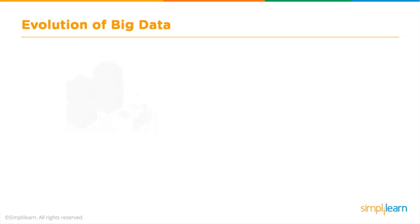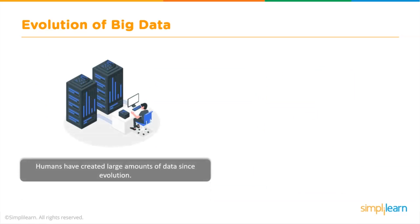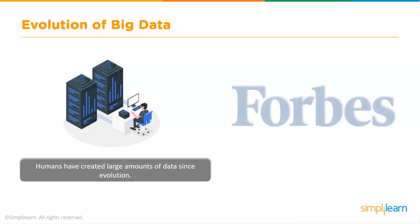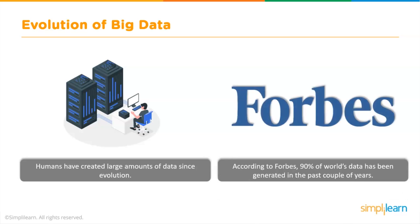Let's look at the evolution of Big Data in human history since the dawn of time. Humans have created large amounts of data since evolution. One interesting fact is that 90% of the world's data has been generated in the past couple of years. Furthermore, the technological advancements made in the last century are more than those made in the previous 2,000 years. Now we know how Big Data has evolved.